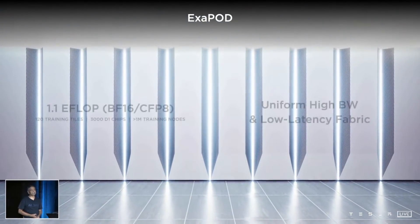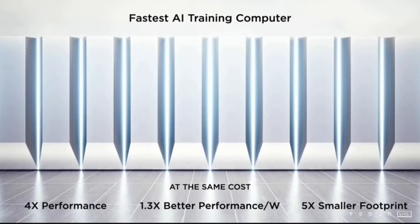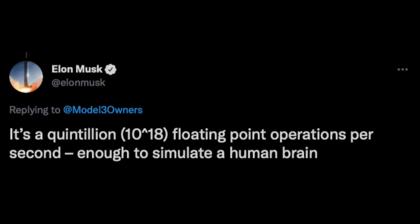But Tesla did give us a little comparison to what else is out there. That Dojo computer will have four times the performance at the same cost but in a five times smaller footprint. This is quite amazing. As Elon tweeted, it's a quadrillion floating point operations per second—enough to simulate a human brain.